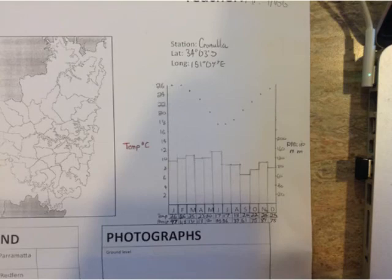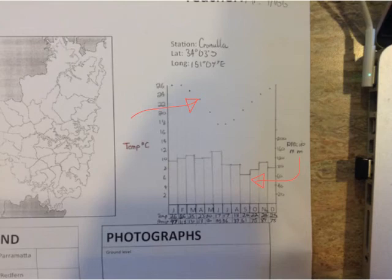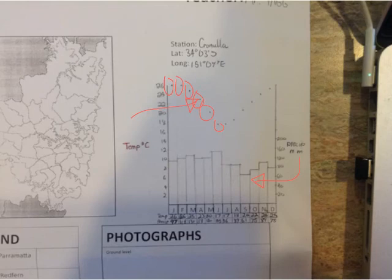Remember: temperature is the line graph and precipitation is the bar graph. When you plot the temperature dots, make sure you plot them in the middle of each bar column, not on the sides. For the bar graph, just draw up the bars as you normally would. We'll talk about why plotting in the middle is important on the next slide.